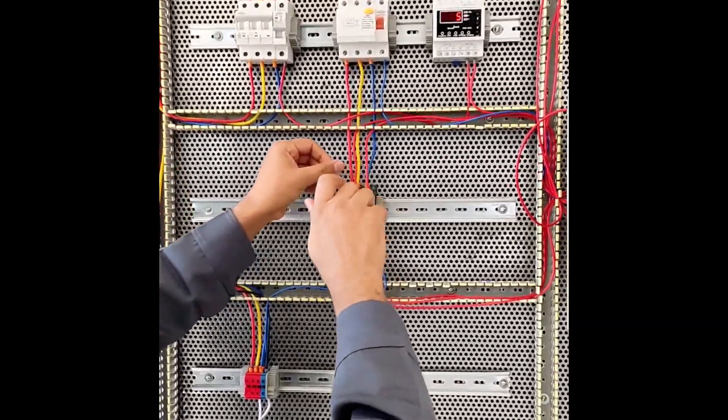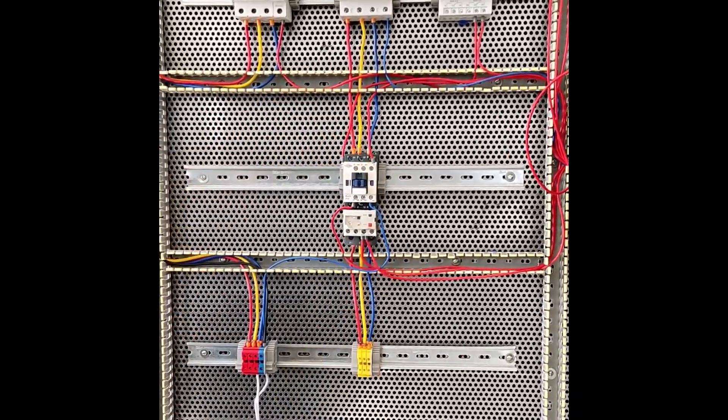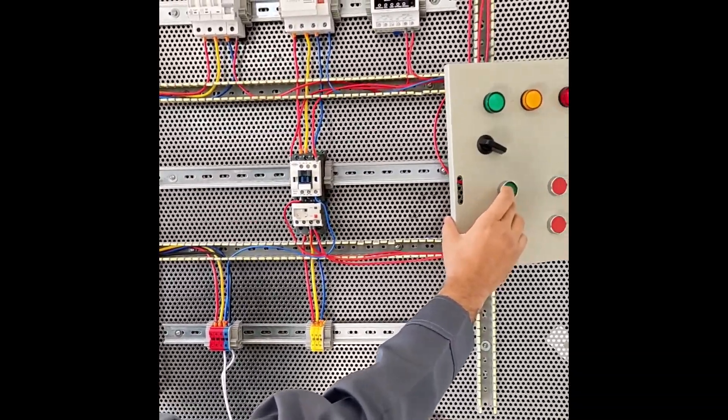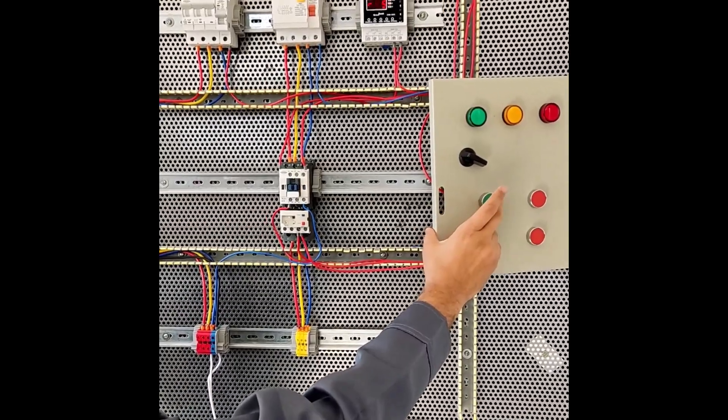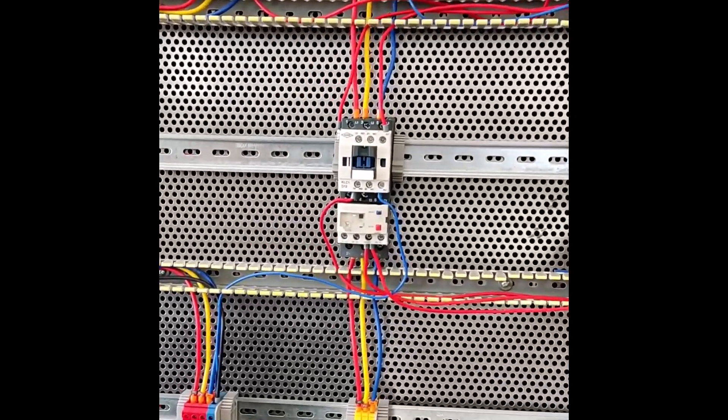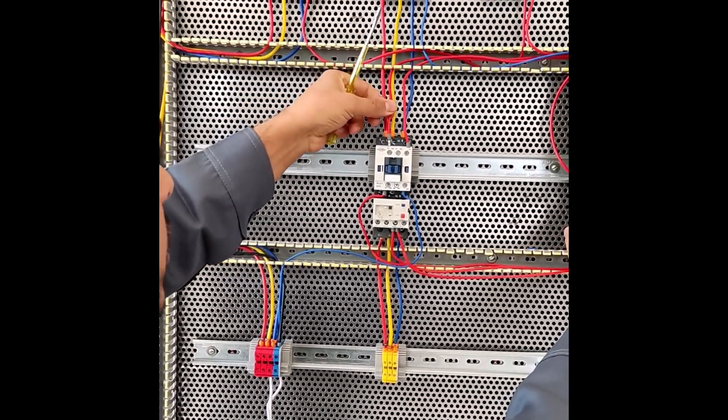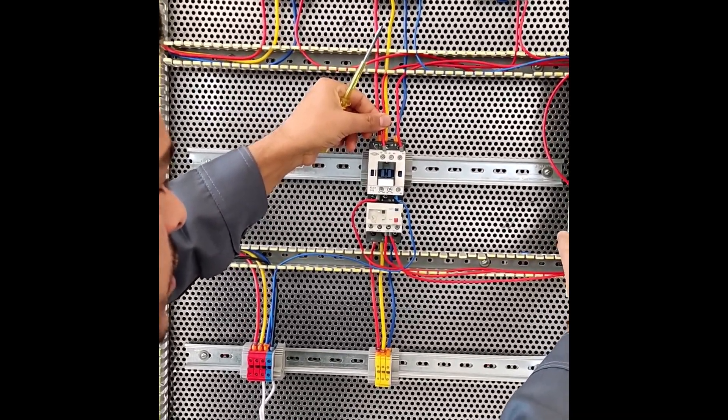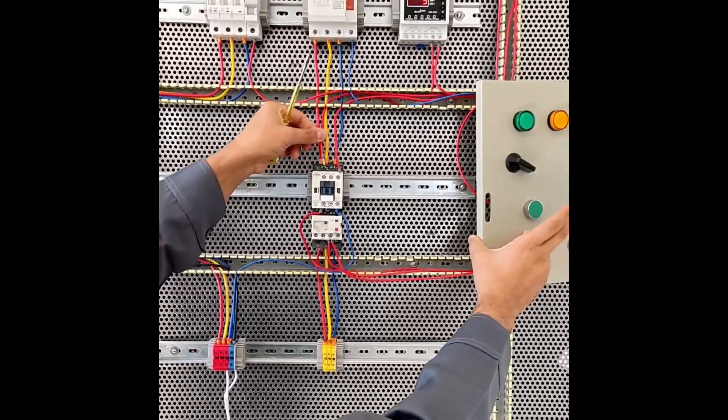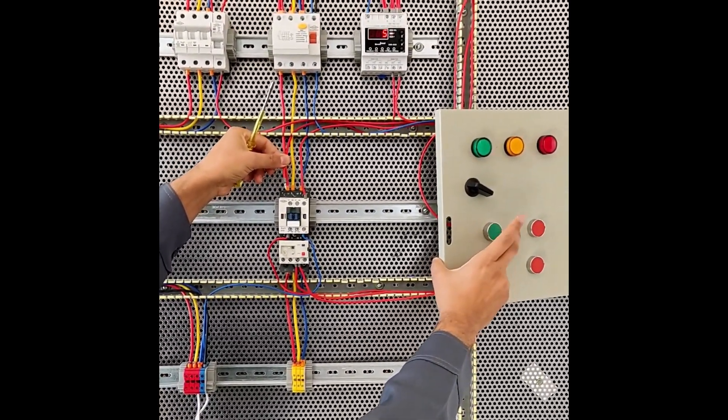Now suppose we want to remove 13 and 14. We want it to be instantaneous. When we remove it with the hand, it becomes instantaneous. If we connect this contact, it becomes permanent. In this way.